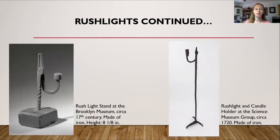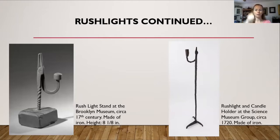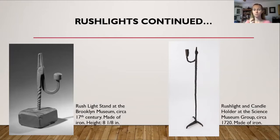Some more examples of rush light holders. The rush light stand on the left is at the Brooklyn Museum, from about the 17th century, made of iron — again, a wooden base with iron that looks like a pair of pliers. The holder on the right is a rush light and candle holder combination. As we get into later time periods, you find more rush light holders have both a candle holder and a rush light holder option. This one is from the Science Museum Group, from about 1720, and it's made of iron.